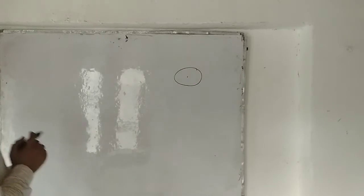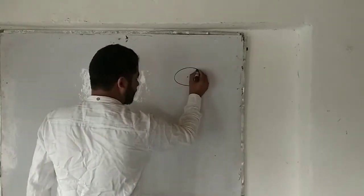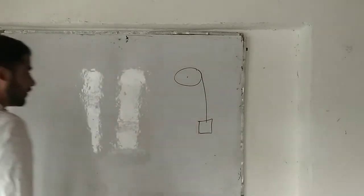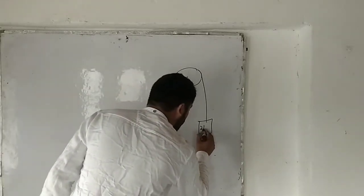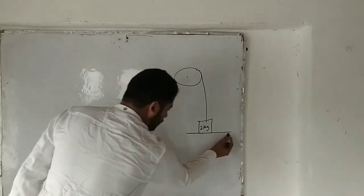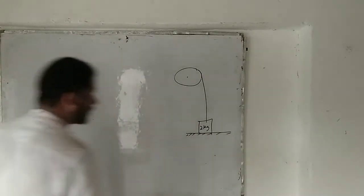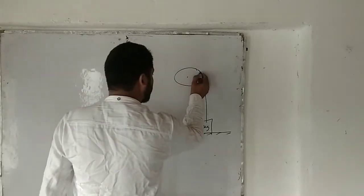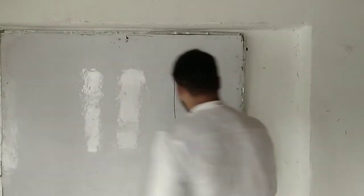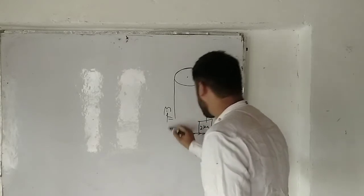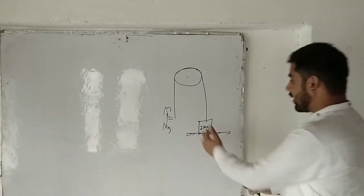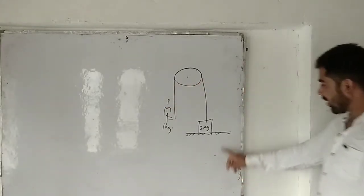Let me address the problem. Suppose we have a frictionless pulley with a massless string. One end of the string is attached to a block whose mass is 2 kg, resting on a horizontal surface. On the other side of the string there is a cat whose mass is 1 kg.